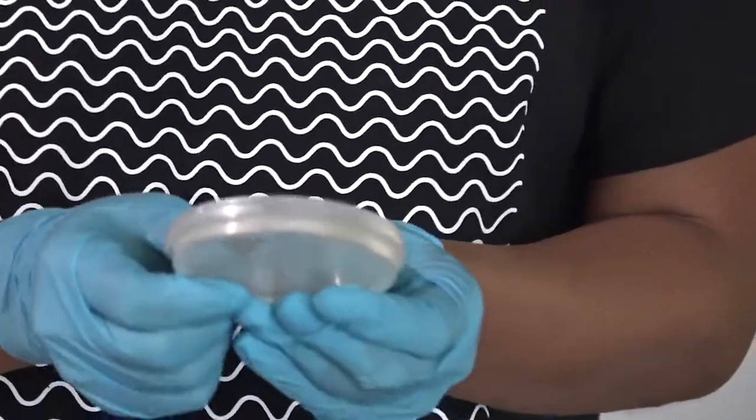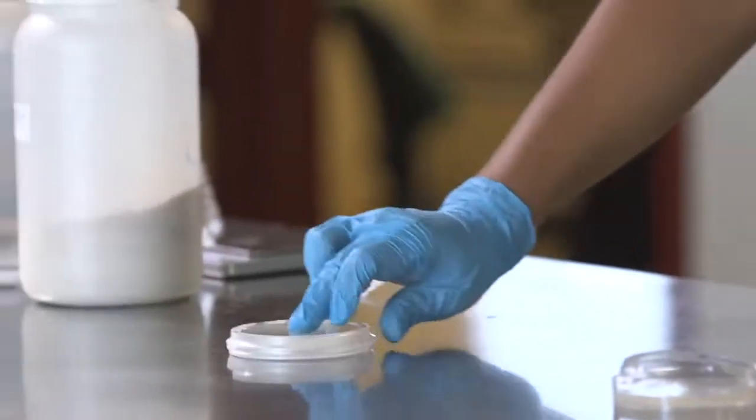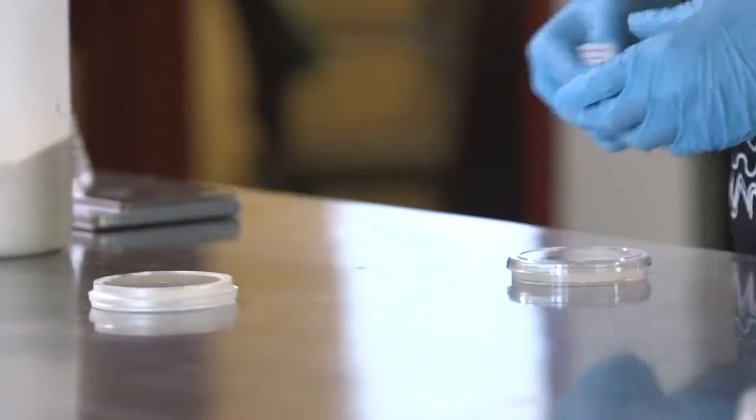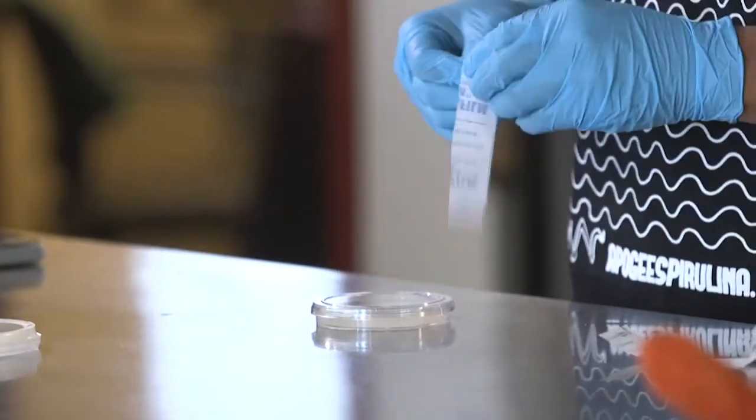And when we store the plates, we store them upside down. That's so that water doesn't condense on the lid and drip back down onto the agar.